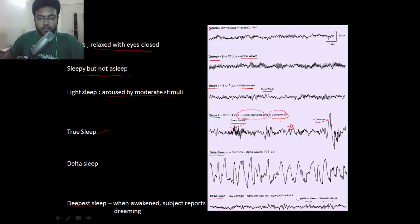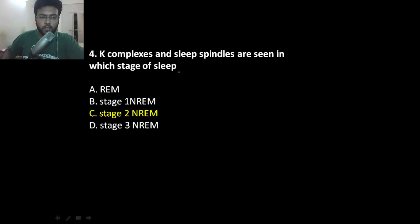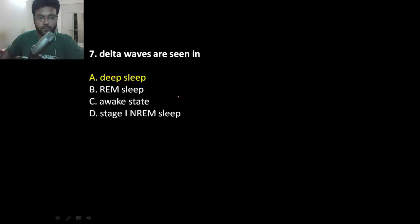So alpha, theta, sleep spindles, K complex and delta waves. K complex and sleep spindle are found in stage 2. Remember, theta waves in stage 1 and delta waves in stage 3 and desynchronized waves in REM stage. Delta waves in deep sleep.